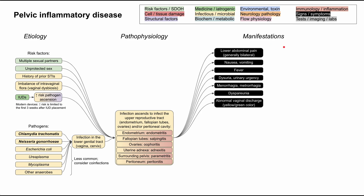Now let's talk about the manifestations. There is usually bilateral lower abdominal pain, with adnexal tenderness and cervical motion tenderness being classic descriptions for PID. You can get nausea and vomiting, fever as with any infection, and problems with urination such as dysuria and urinary urgency. You can have menorrhagia, which is heavy menstrual bleeding, or metrorrhagia, which is bleeding between menstrual cycles. You can also have dyspareunia — that's pain with sex — and abnormal vaginal discharge, which can be yellow-green in color.